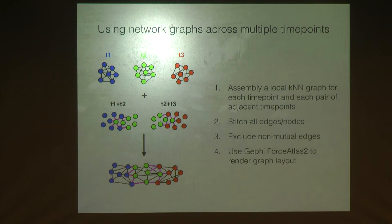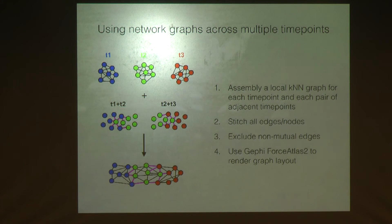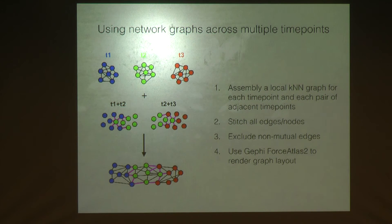One thing that SPRING can't really do at the moment is handle multiple time points. Time points introduce a complication to trajectory reconstruction: how do you assemble a graph where you have multiple time points and global changes that distinguish each time point from another? Time points actually behave somewhat like batch effects when you try to put them all together. The strategy we're using is to assemble a local KNN graph for each time point and each pair of adjacent time points. The nice thing about assembling the KNN graph is you can use gene expression information to do that initial construction, and then omit the gene expression information entirely — assemble the bridge, then assemble time point two and time point three.